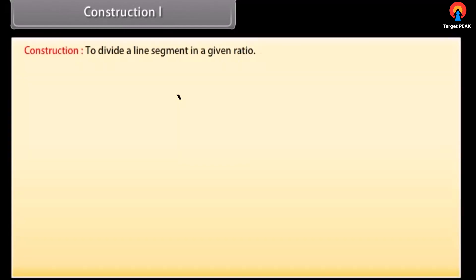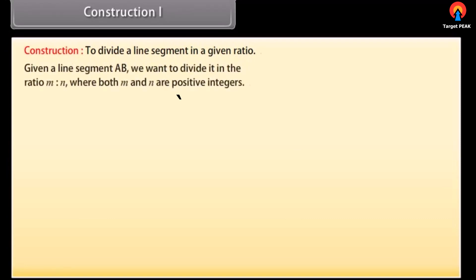Construction 1: To divide a line segment in a given ratio. Given a line segment AB, we want to divide it in the ratio M is to N, where both M and N are positive integers. Let's take M as 4 and N as 2.